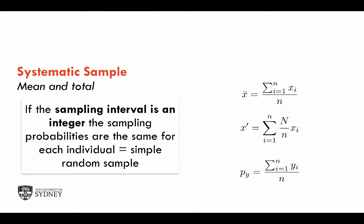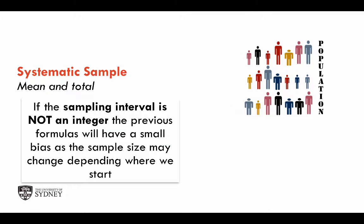If the sampling interval is an integer, as in the previous case, the sampling probabilities can be shown to be exactly the same for each individual. In fact, it would be a situation similar to simple random sampling, and the estimators we've seen for the mean, total, and proportion would apply to the systematic sample. If the sampling interval is not an integer, the previous formulas will have a small bias because each individual will have a slightly different probability of being selected. However, in practice, this bias can be rather small.